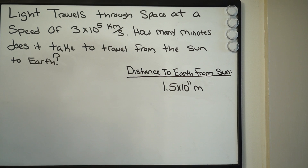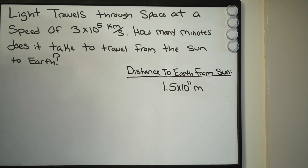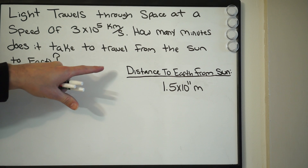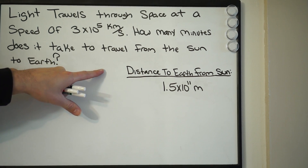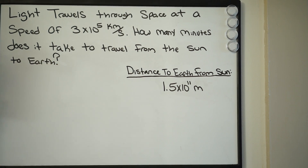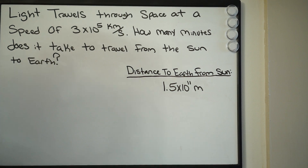What they want to know here is how long it takes light to travel from the sun to earth. They also give you the distance from the sun to earth, and that's going to be 1.5 times 10 to the 11th power, and that is in meters.